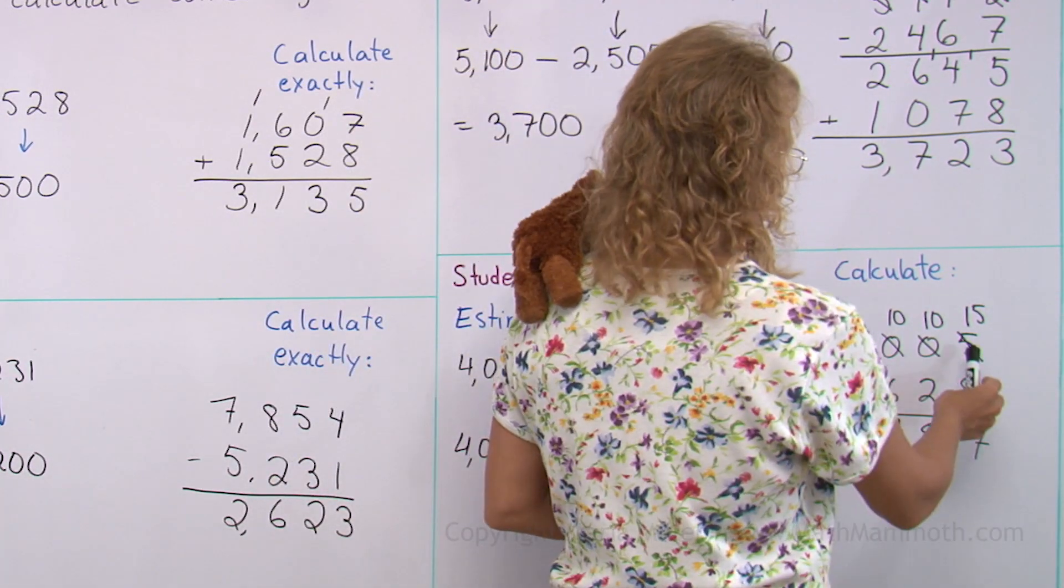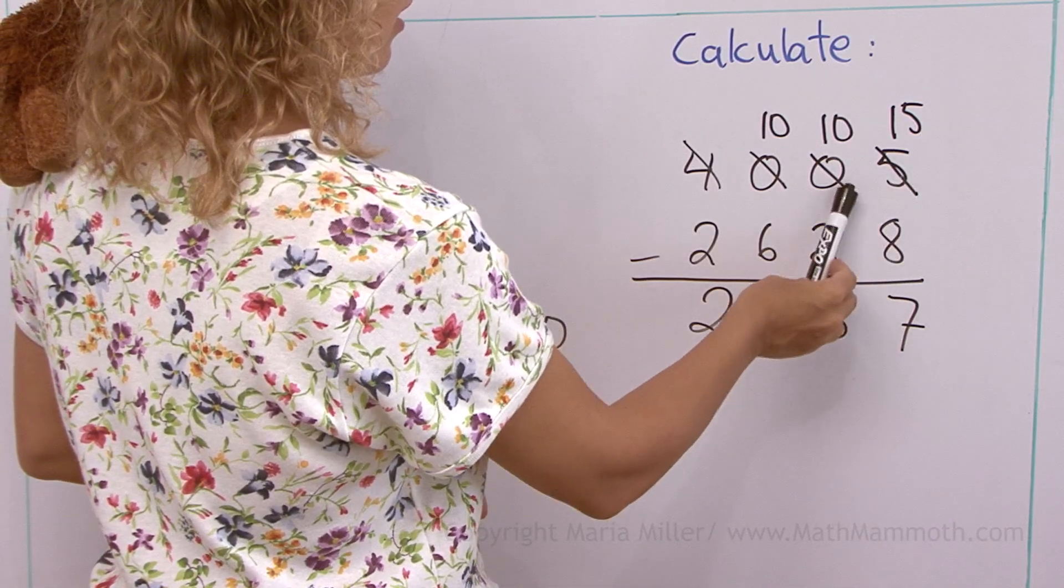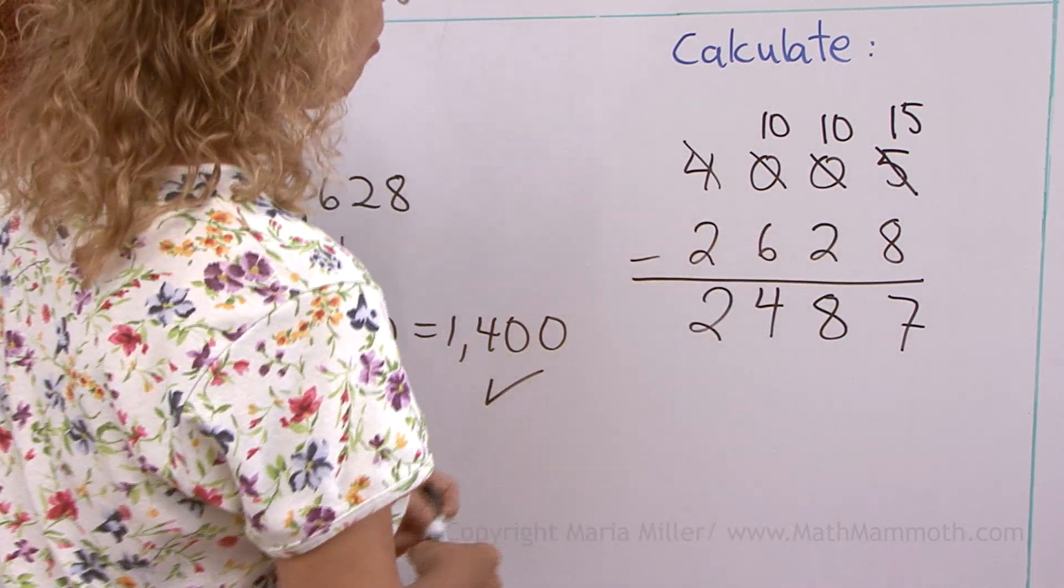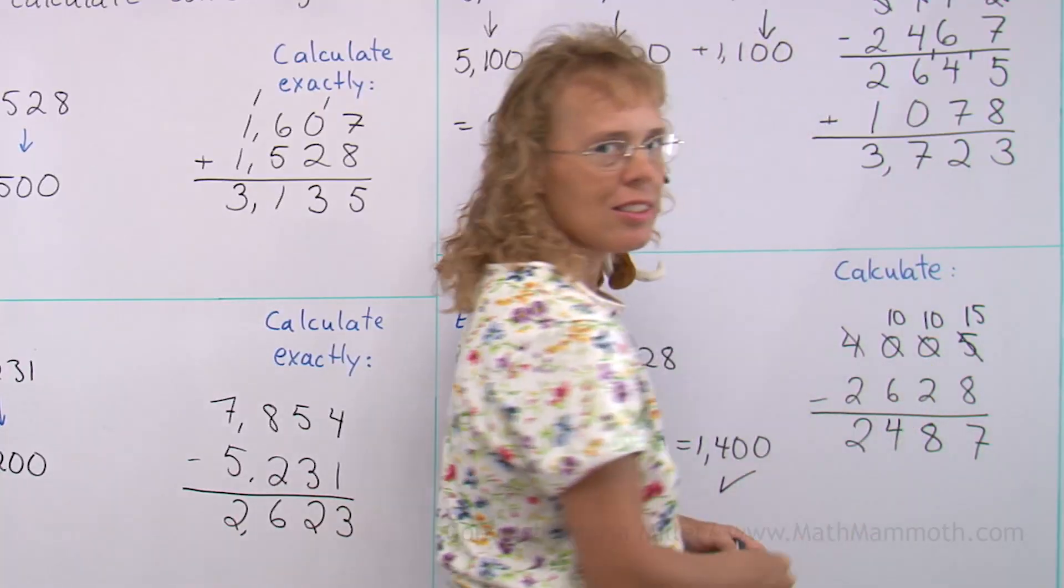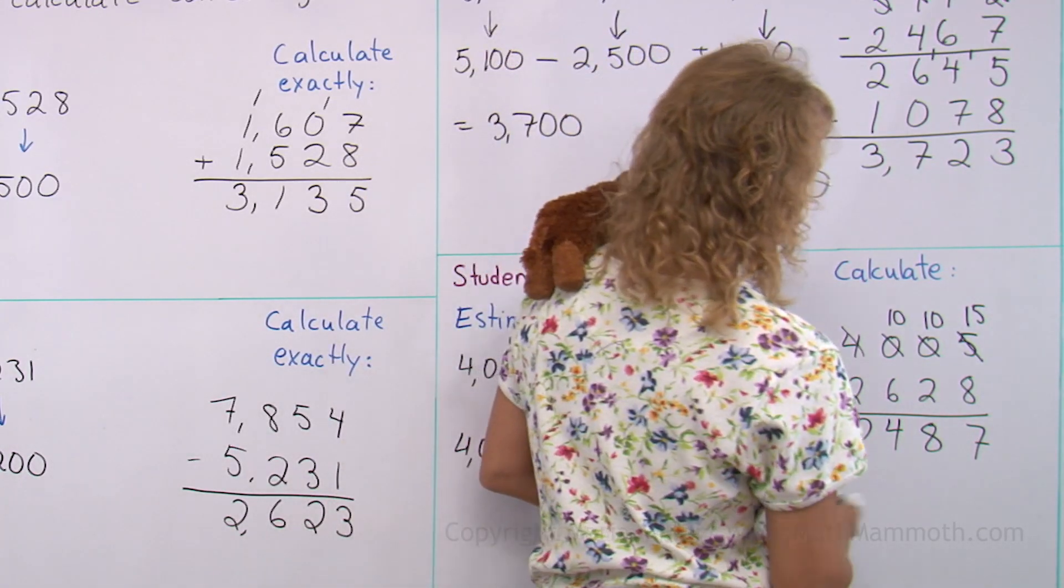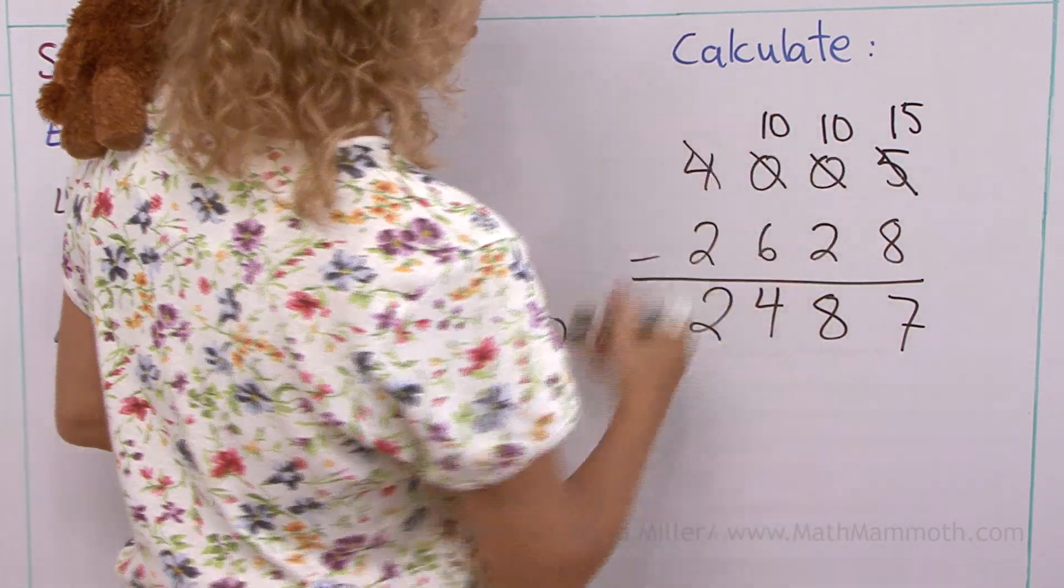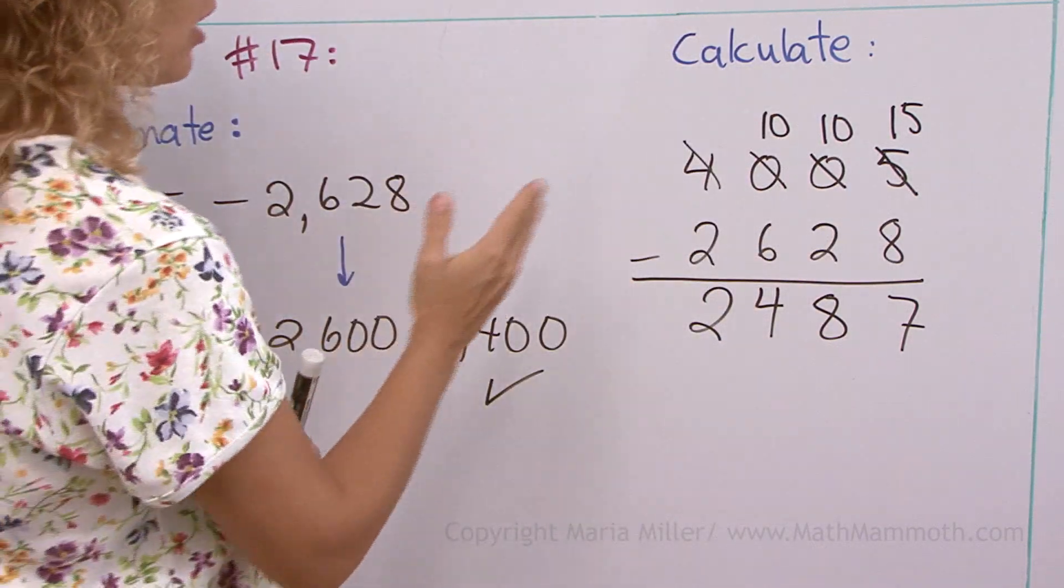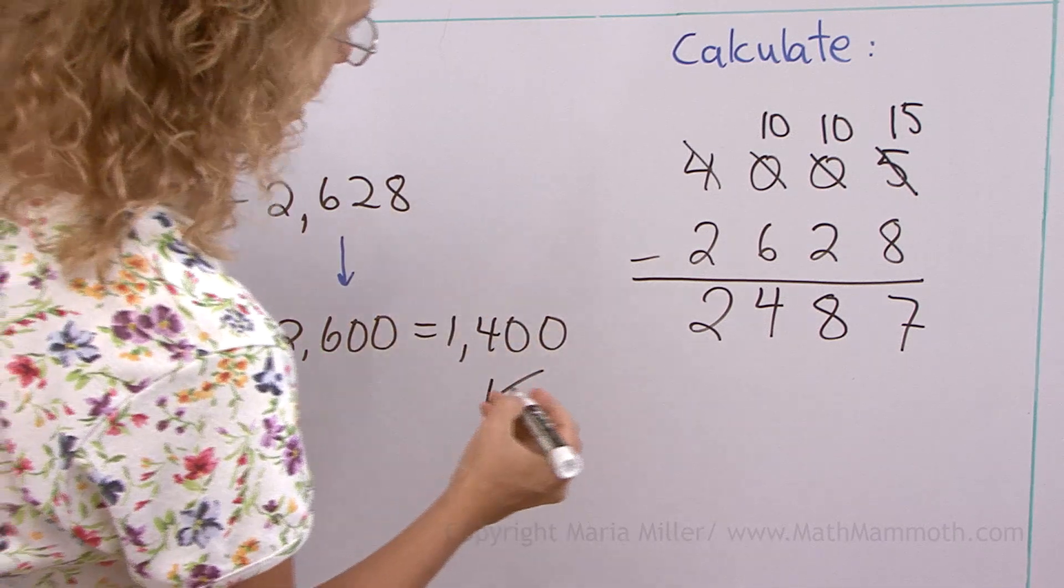And we have 5 minus 8. Well, you do not regroup that way. Right? This looks kind of shady here, what is happening here with the regrouping. So that's why it went wrong. So let's redo it.